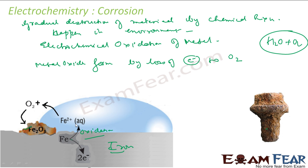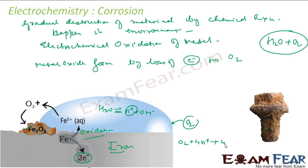If you talk about the reduction reaction, the oxygen will react with H+ to form water. Water will have H+ and OH−. The oxygen from air, H+, and electrons will combine — the reaction will be: O2 + 4H+ + 4e− → 2H2O. For this, the E is 1.23 volt, that means it is a spontaneous reaction.